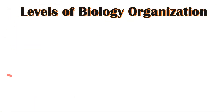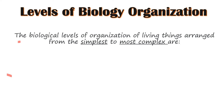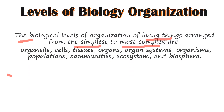The biological levels of organization of living things are arranged from simplest to the most complex. We have organelles, cells, tissues, organs, organ systems, organisms, populations, communities, ecosystems, and biospheres. We also have the atom and the molecule, which are also considered part of biological organization and will be discussed shortly.